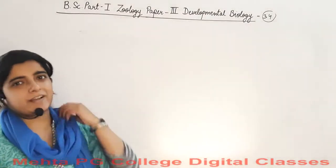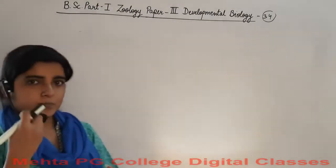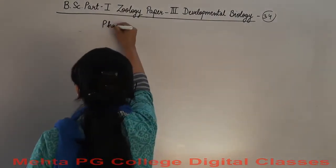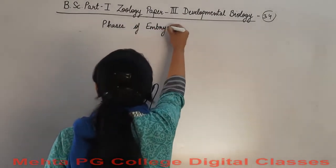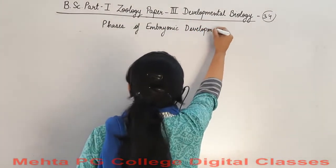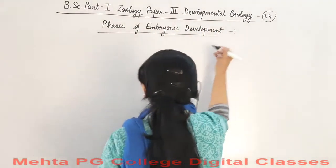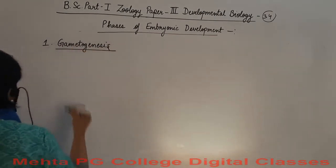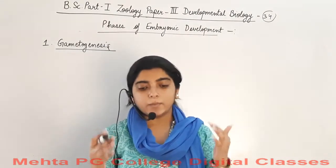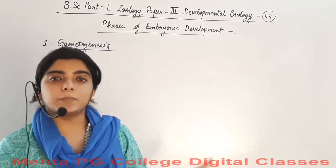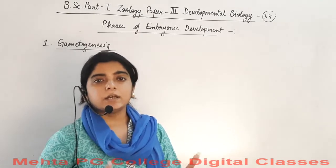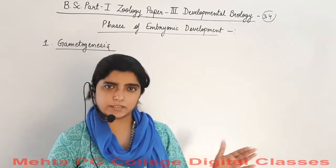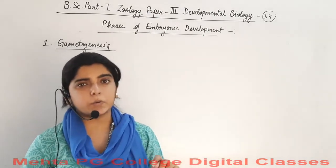I will be teaching paper three, developmental biology, which is around 34 marks. This first class is an introductory class, so we are discussing some points and definitions which we have already studied in 12th class. So we begin with the phases of embryonic development. What is embryonic development? It is the development of the embryo, and it has different stages through which the embryo undergoes development.